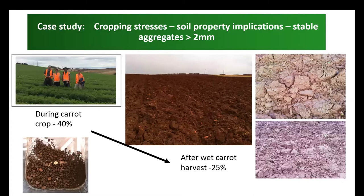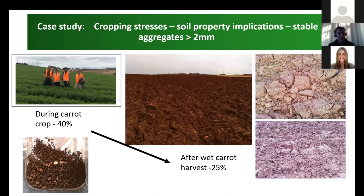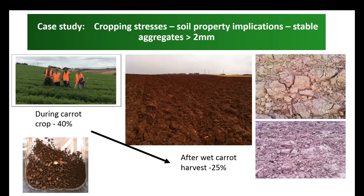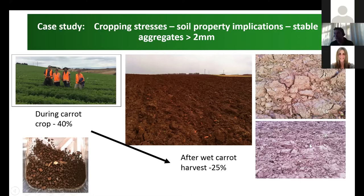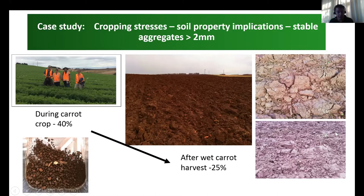If we look at an extreme example of why soil health is important and what can happen if we don't look after it — here we've got an example of extreme soil degradation. This shows a carrot crop at Forsyth one and a half years ago. During the carrot crop, we made aggregate stability measures, looking at the proportion of aggregates greater than 2mm. During the crop these were 40%, but after a wet late carrot harvest with a lot of damage occurring, we see a reduction from 40% down to 25% — a clear reduction in soil structure.